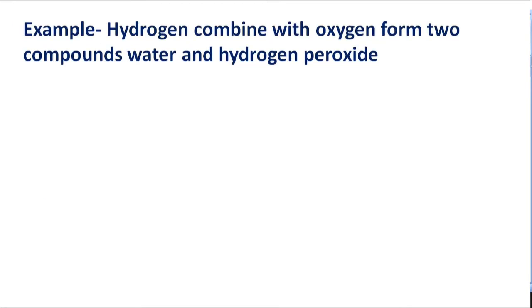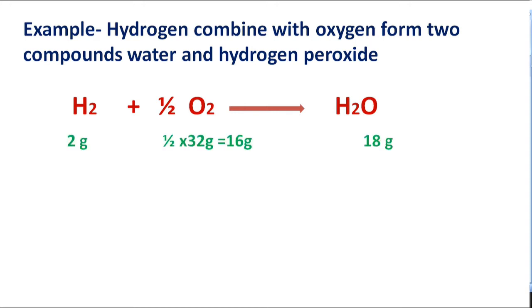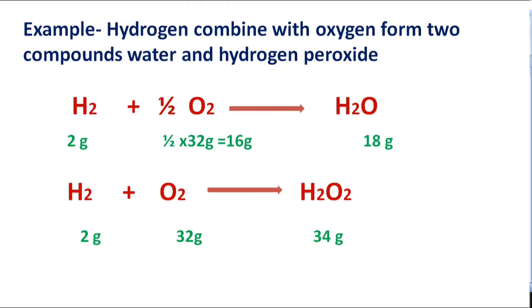To explain this law, we take the example of hydrogen combined with oxygen forming two compounds: water and hydrogen peroxide. Here, 2 grams of hydrogen combined with 16 grams of oxygen gives 18 grams of water. In hydrogen peroxide, 2 grams of hydrogen combined with 32 grams of oxygen gives 34 grams of hydrogen peroxide.